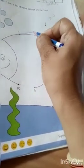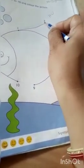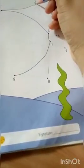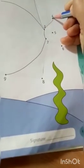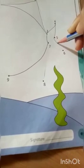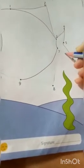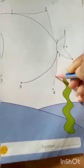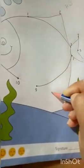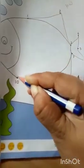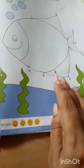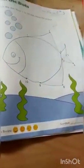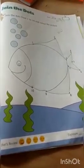Let's start. This is number 1, then go for number 2, then number 3, 4, 5, 6, 7, 8, 9 and number 10. Wow! What a beautiful picture. But this is empty — you have to color it. Color is empty. Okay, kids? Bye-bye!